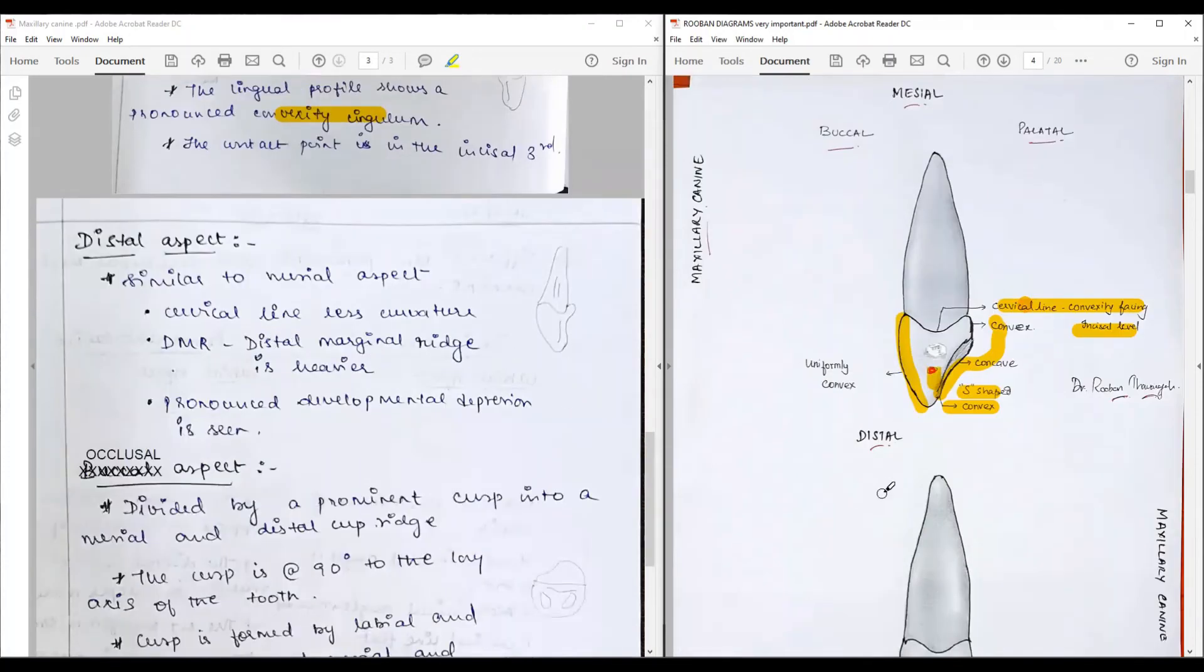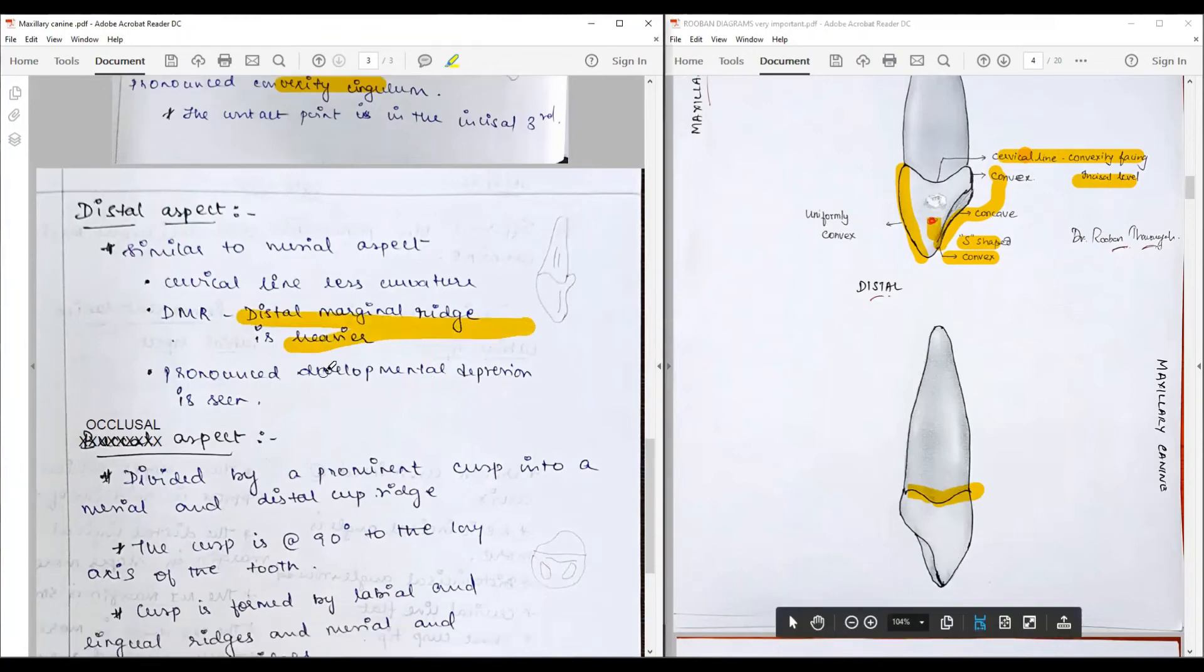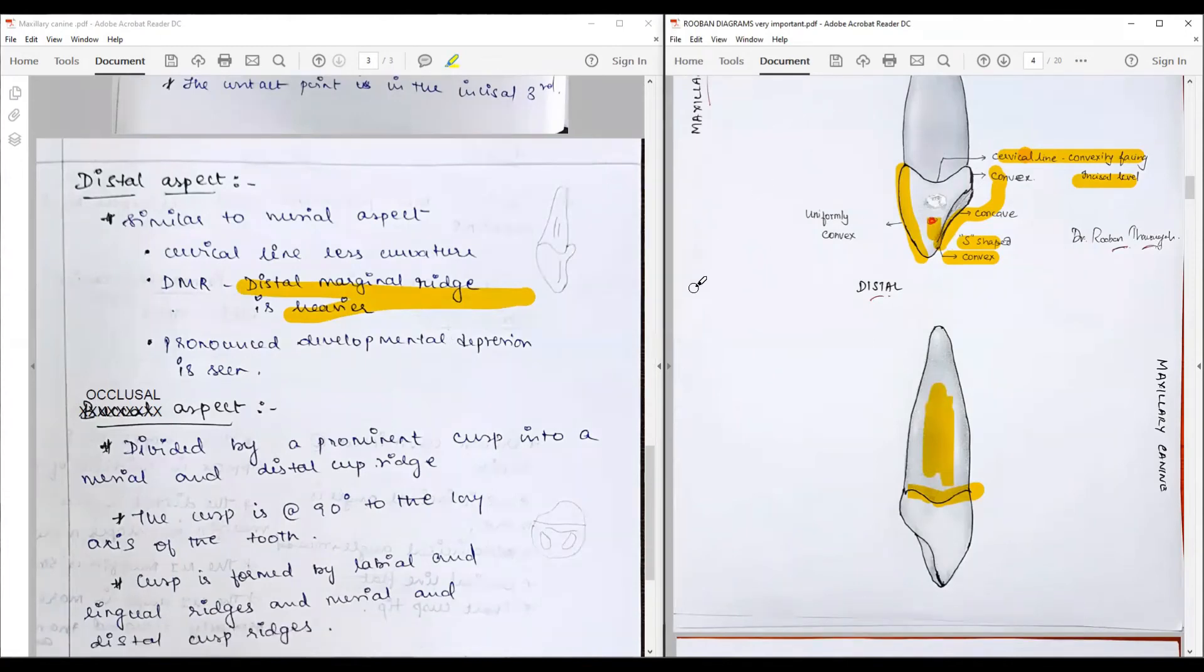Distal: very similar to that of the mesial aspect, but this cervical curvature is slightly less and distal marginal ridge is heavier. Pronounced developmental depression is seen. Those are the only features that differentiate; otherwise it is a replica.